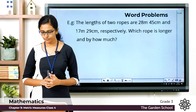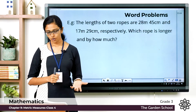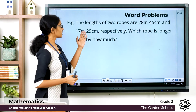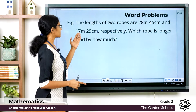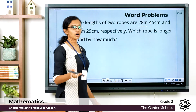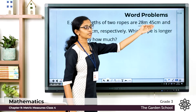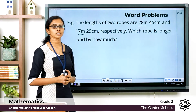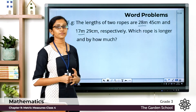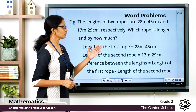Now one more word problem. The lengths of two rows are 28 meter 45 centimeter and 17 meter 29 centimeter respectively. Which row is longer and by how much? One row is 28 meter 45 centimeter and the other is 17 meter 29 centimeter. Obviously the first row with the length 28 meter 45 centimeter is the longer one. To find by how much it is longer, we find the difference between the lengths by subtracting the two measurements.